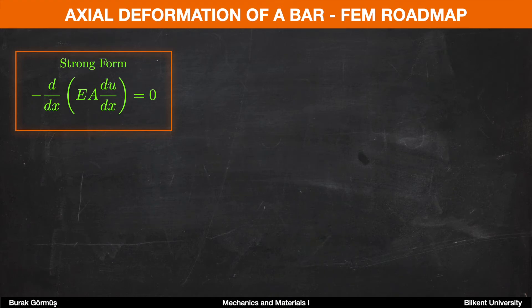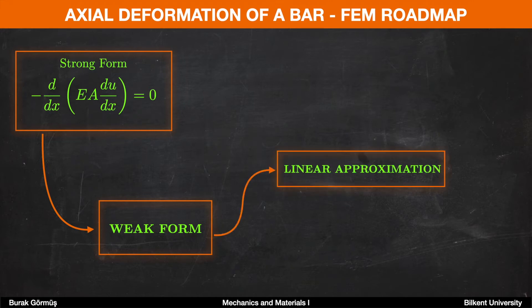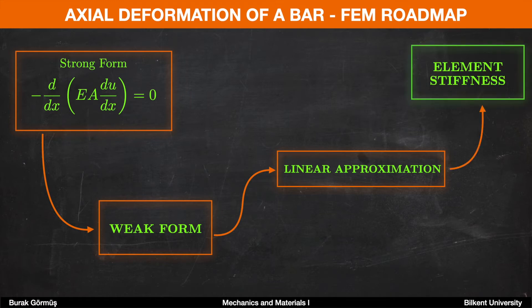While solving problems with finite element method, we follow a simple route. The first step is to obtain our strong form, and the strong form here is our differential equation. Our second step is to convert the strong form into a weak form by expressing the differential equation using integrals. Subsequently, we need to approximate the unknown displacement function. While solving truss problems, we make the assumption that displacement values can be linearly approximated along the element. After this step, we perform numerical integrations and obtain the element stiffness matrix value.